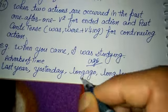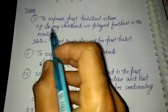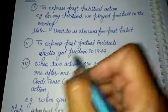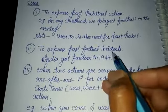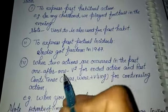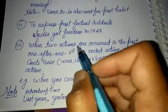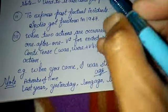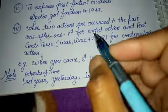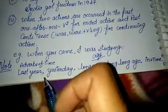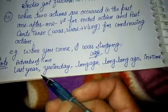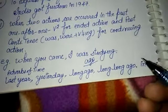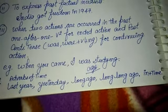To summarize simple past tense: we use the second form of the verb for past habitual actions, past factual incidents, and for the completed action when two actions are given. For time expressions like 'long ago,' 'long long ago,' and 'in + time,' we always use the second form of the verb.